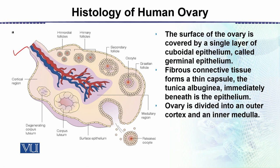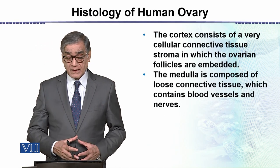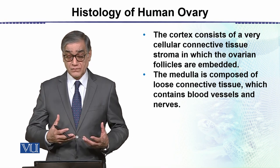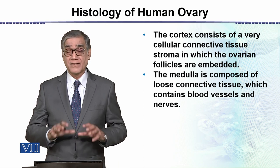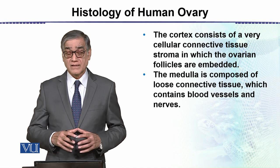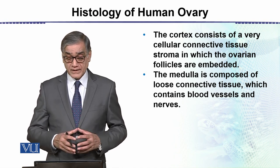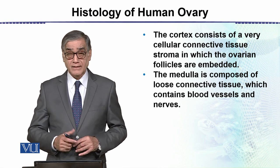Immediately below the tunica albuginea is the surface epithelium. The ovary is divided into two regions: the outer cortex and the inner medulla, just like in the kidneys. The cortex consists of cellular connective tissue stroma in which ovarian follicles are embedded. The medulla is composed of loose connective tissue containing blood vessels and nerves.